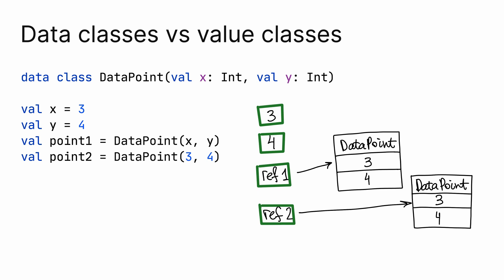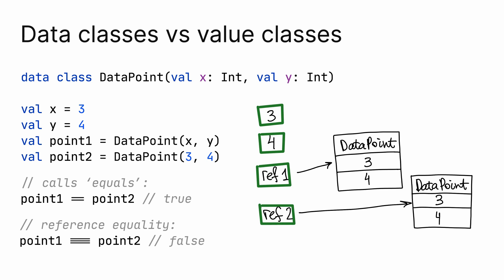Let's compare value classes with regular data classes. I define a point as a data class – data point – to distinguish it from a value point. When we define two data points, the corresponding objects are created in memory. The variables p1 and p2 store only references to these objects. When we compare two points, Kotlin calls equals under the hood, which compares the underlying data. We can also check reference equality and compare two references. Since they are different, such a check returns false.